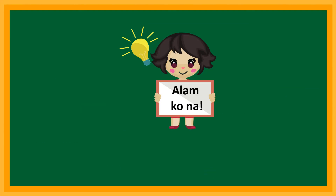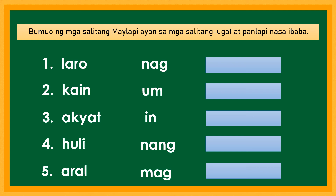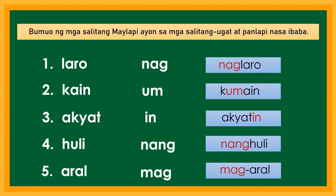Ayan, natapos rin ang ating aralin. Ngayon, alam mo na kung ano ang anyo o kayarian ng salita. Bumuo ng mga salitang may lapi ayon sa mga salitang ugat at panlapi. Ang mga sagot ay: naglaro, kumain, akyatin, nanghuli, mag-aral.